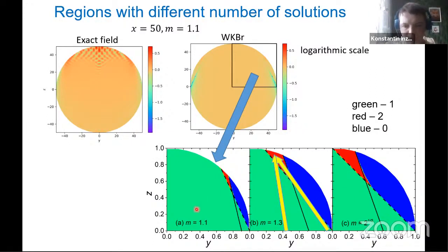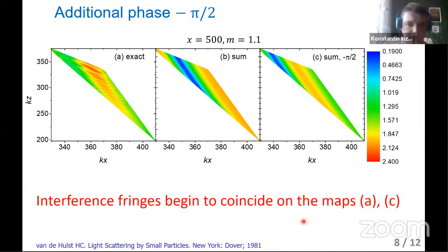Here you can see these maps for different refractive indexes. It means that at each point of green region, we have only one ray, one incoming ray. At each point of red region, we have two different rays. If we want to calculate accurate electric field at this point, we have to sum different electric fields from two rays. Also, the second ray crosses the focal line, so we have to account for additional phase minus pi divided by two.